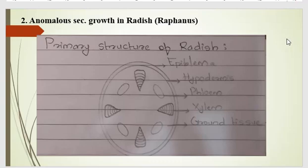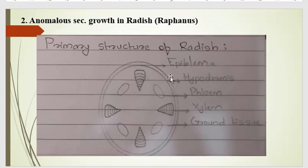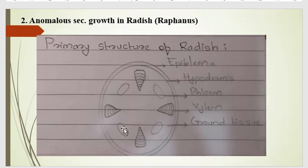Hello students, today we will talk on the anomalous secondary growth in radish, that is Raphanus sativus. In the primary structure of radish, the outer layer is the epidermis, then below the epidermis there is the hypodermis layer. At the center, the xylem alternates with the phloem; the xylem is in triangular shape and phloem is oval shape, and the entire central part is covered with ground tissues.